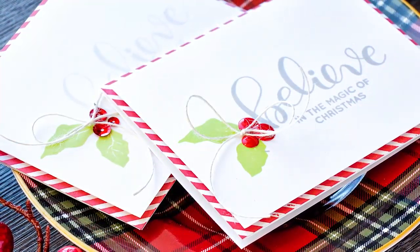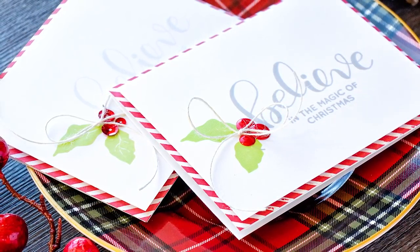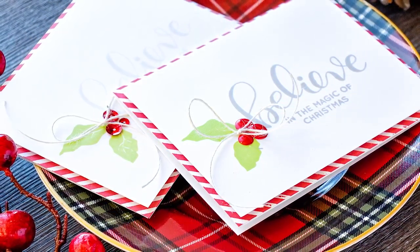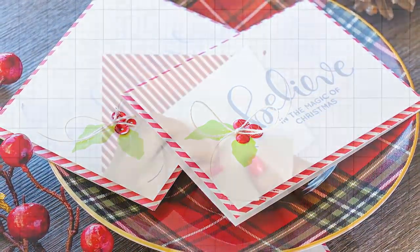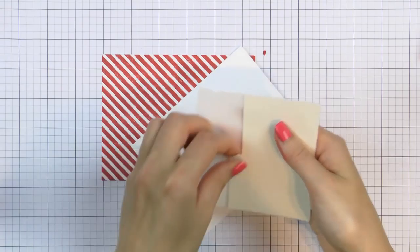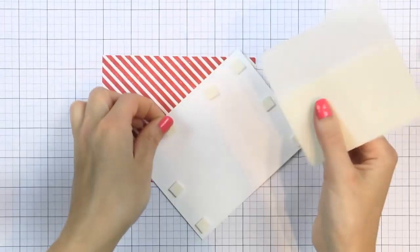By the way, you can also stamp the airmail stripe background stamp directly onto the card base and use less cardstock, but I didn't mind stamping it onto a panel and then adding that panel onto a card base. And if you go with this method, you can have a colored card base, so maybe a bright red or a nice holiday green color.